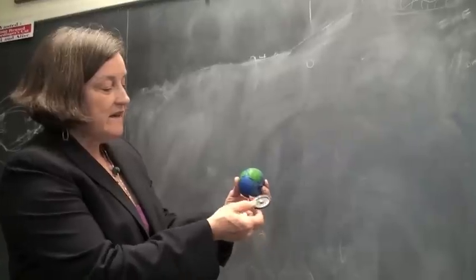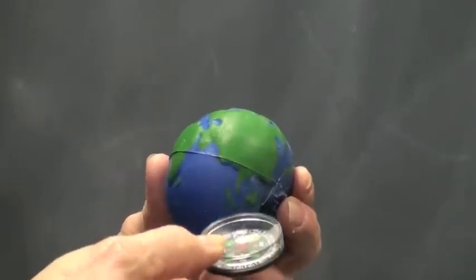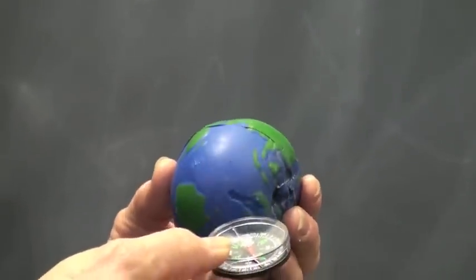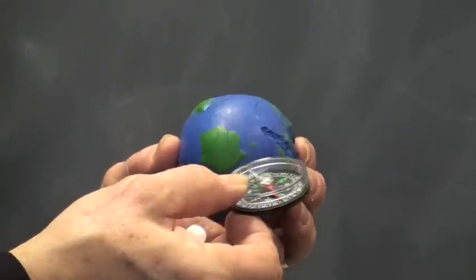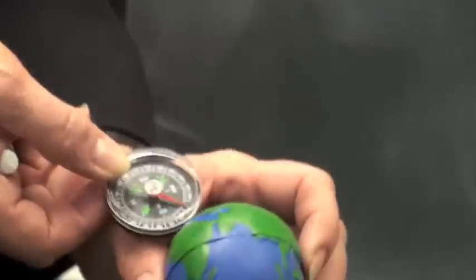When we take a compass, that compass will point to the direction where the magnetic field is on this ball. This would be the south pole of the ball, and over here would be the north pole of the ball.